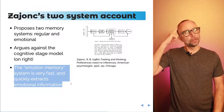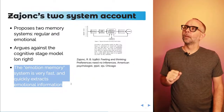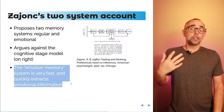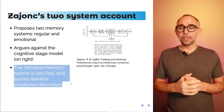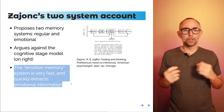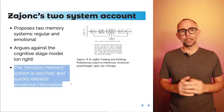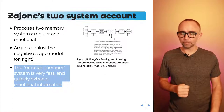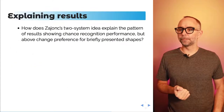One thing to put in the back of your mind is: do we need to do that? Can we potentially explain his finding without assuming there are two kinds of memory systems? And what would that explanation look like?